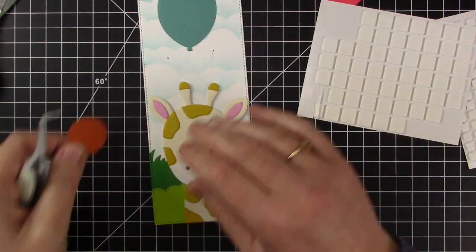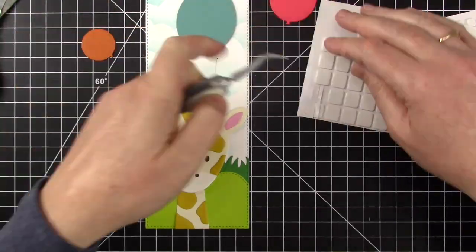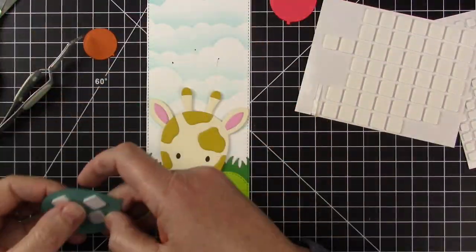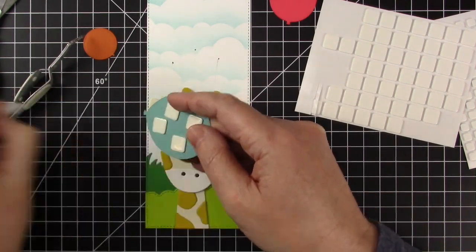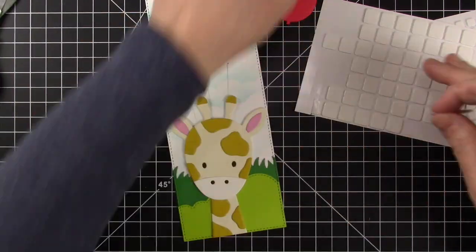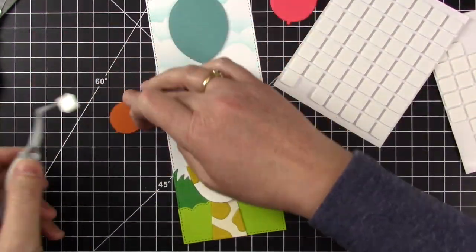Now moving on to the balloons I'm just going to reposition them again, get a quick idea and start adding foam squares. I'm doing thin foam squares for the back balloon. I want it to be the lowest and just sticking it over the drawn string.